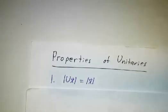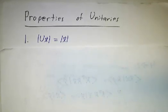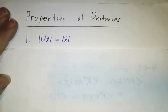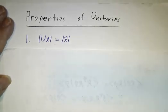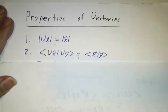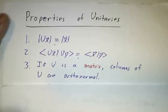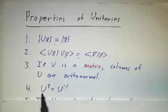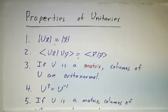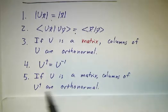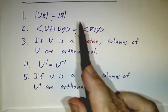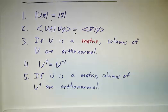Finally, unitary matrices are just like orthogonal matrices, only on complex vector spaces. They preserve length and inner product. If it's a matrix, the columns are orthonormal — meaning the adjoint is the inverse — and the columns of the adjoint are orthonormal, which means the rows of the original matrix are also orthonormal. Any matrix that has one of these properties has all of these properties, and we call it unitary.